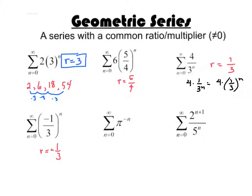This next one — you look at this negative exponent, and I might think about rewriting this. Instead of pi to the negative n, why don't I write that as 1 over pi to the n, which is the same as 1 over pi, all to the n. So then the common ratio is 1 over pi.